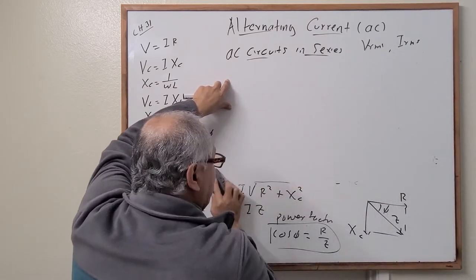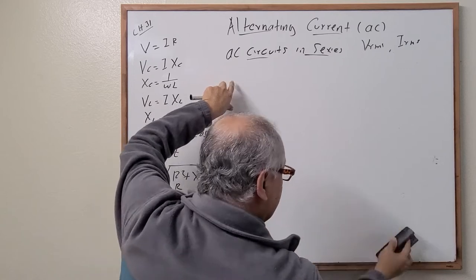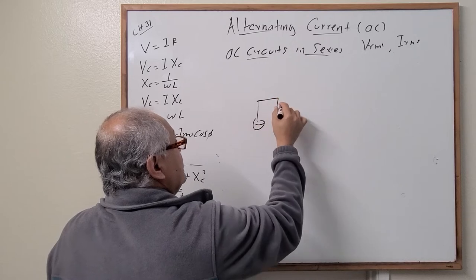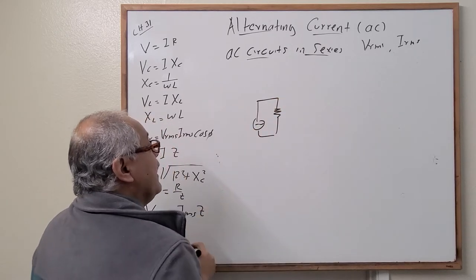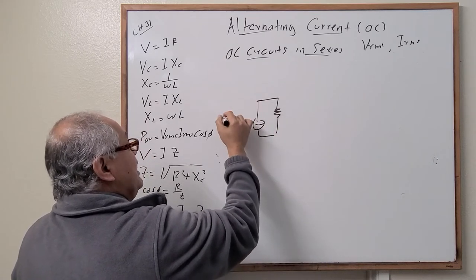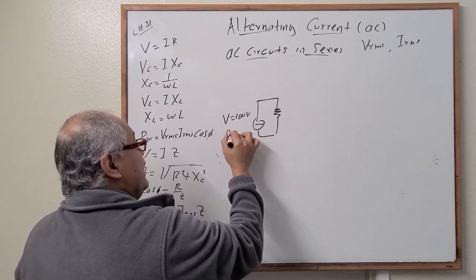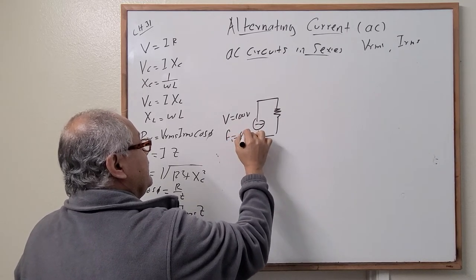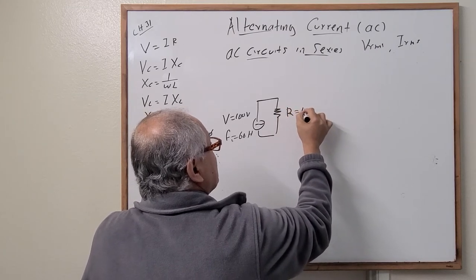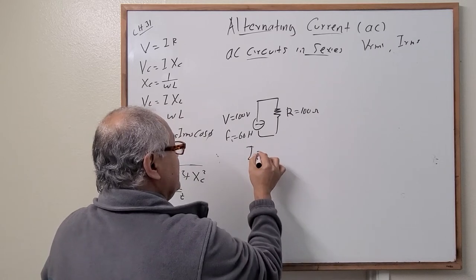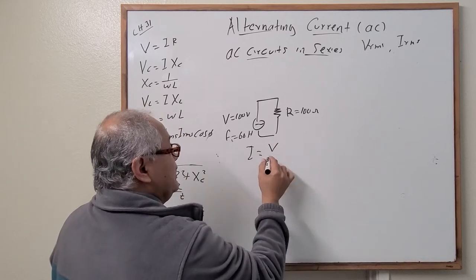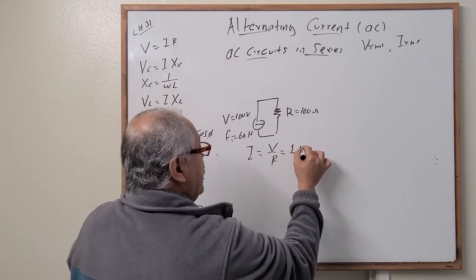Now let's do an example. Imagine we have a resistor with an AC source where voltage equals 100 volts, frequency equals 60 hertz, and resistance equals 100 ohms. Using Ohm's law, current equals voltage divided by resistance, giving us 1 amp. Now what happens if we use a battery instead? With the same voltage and resistance, a DC source also gives a current of 1 amp.